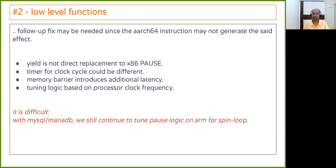Adding ARM-specific instructions is just one part — you may need to further study and tune them, because the effect can be different. Pause has a different latency versus yield on ARM, so just adding yield may not scale the software. You may have to study whether the expected latency from the instruction is correct. The same applies to timers, clock cycles, memory barriers, or logic tied to processor clock frequency. The spin loop, for example, has gone through many variations in MySQL and MariaDB and is still being refined.